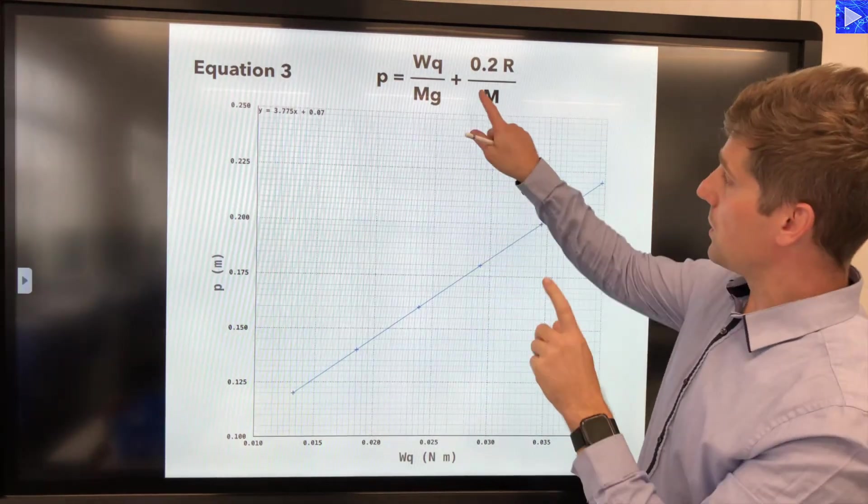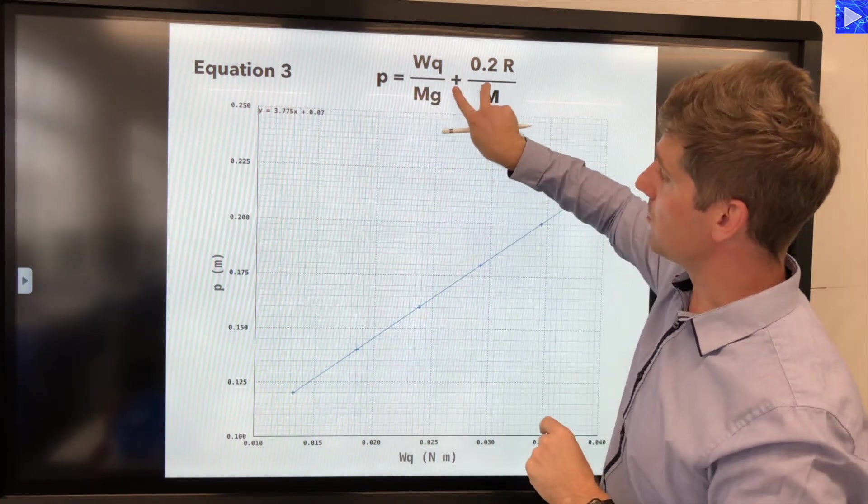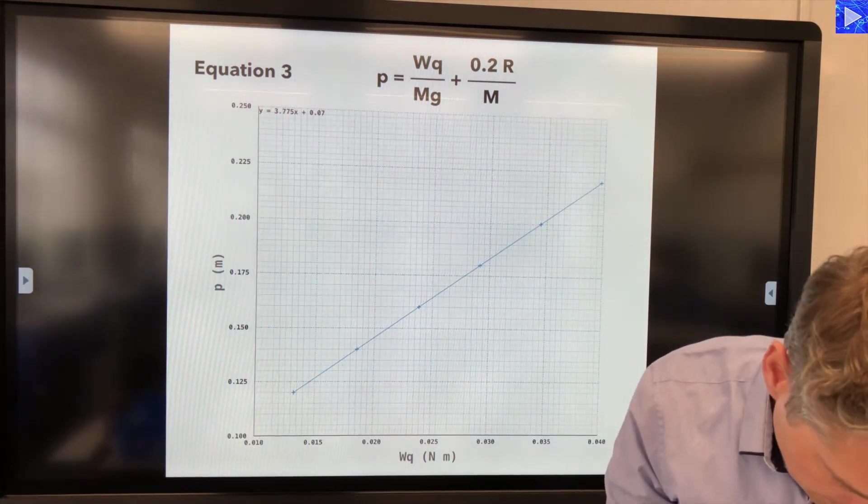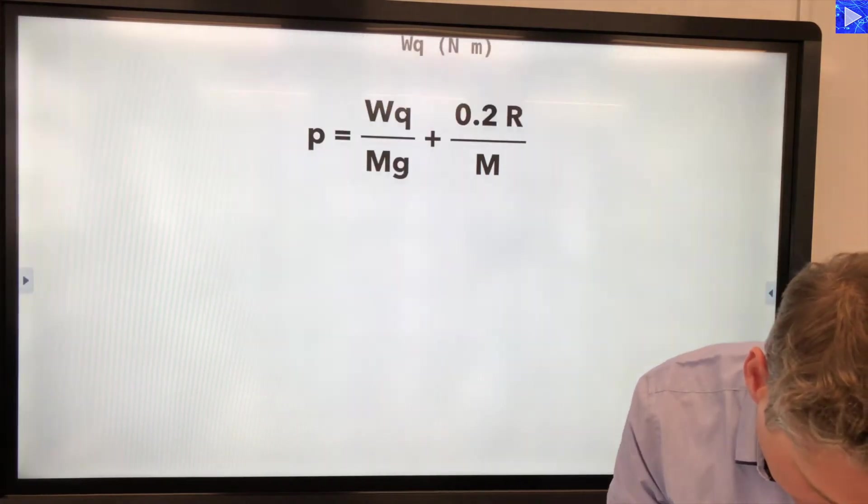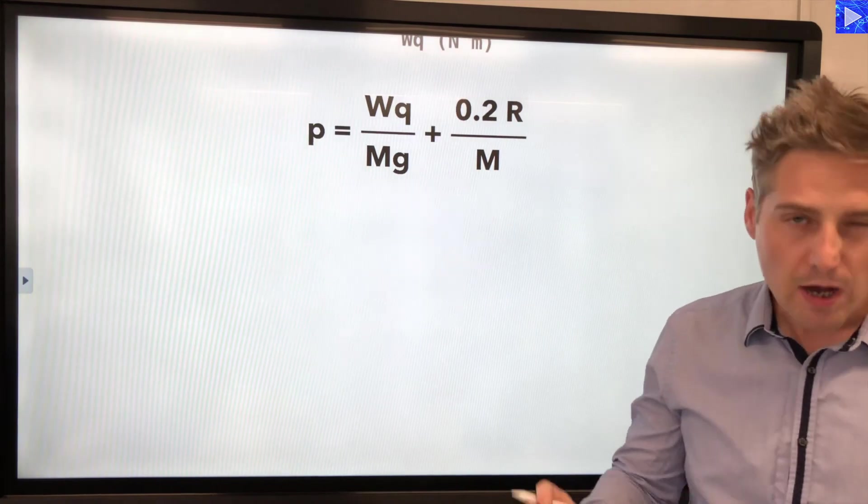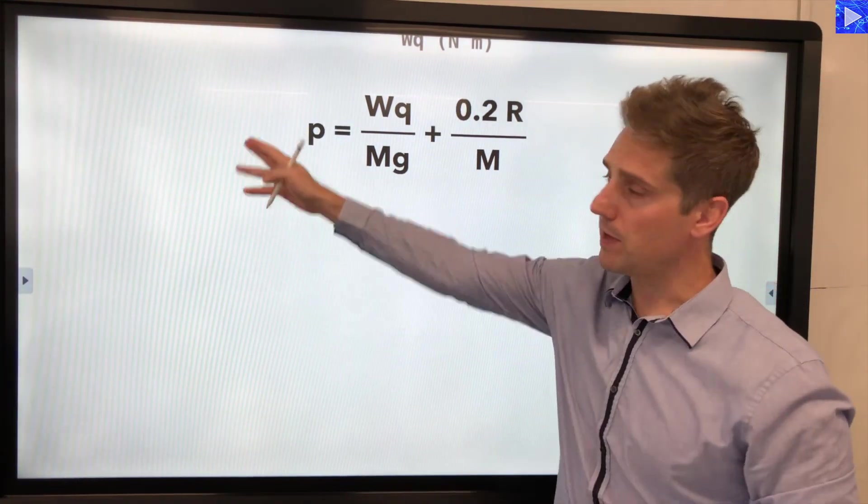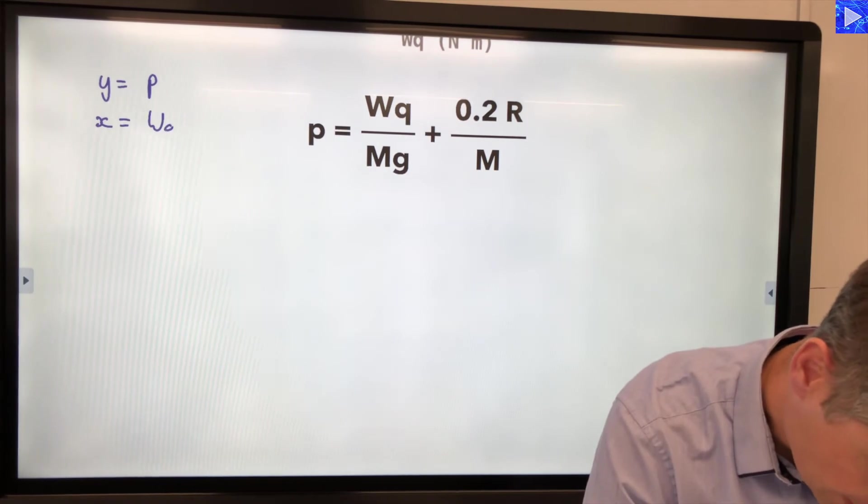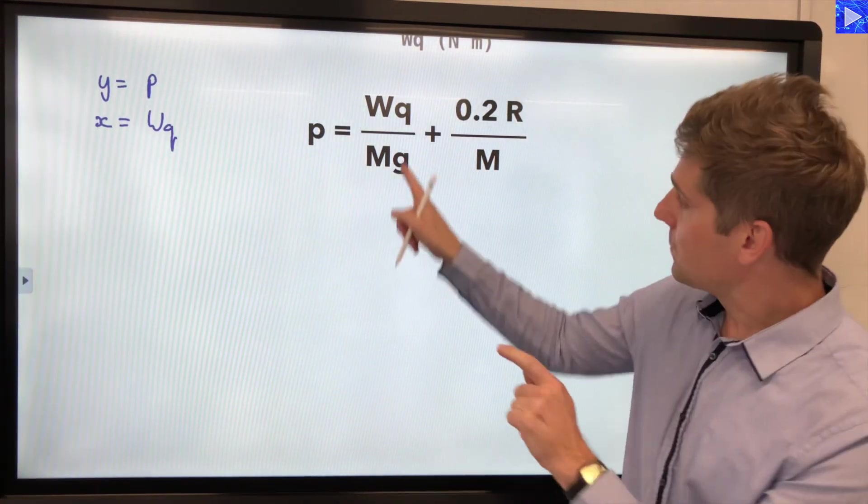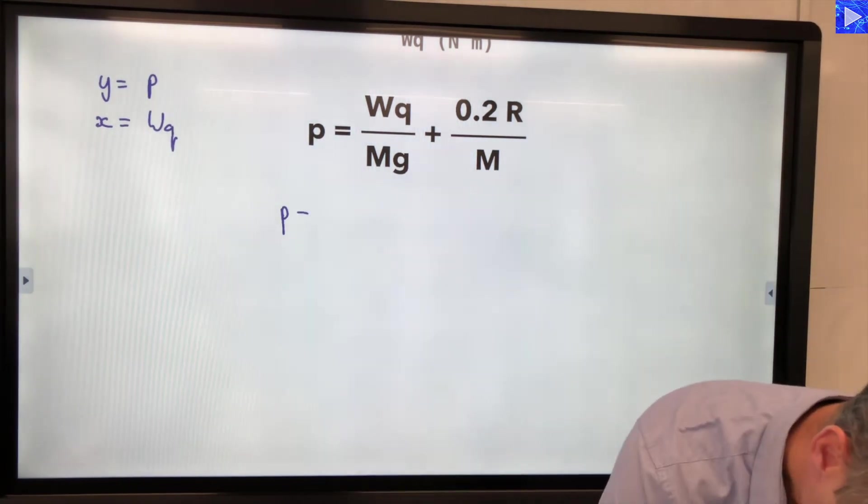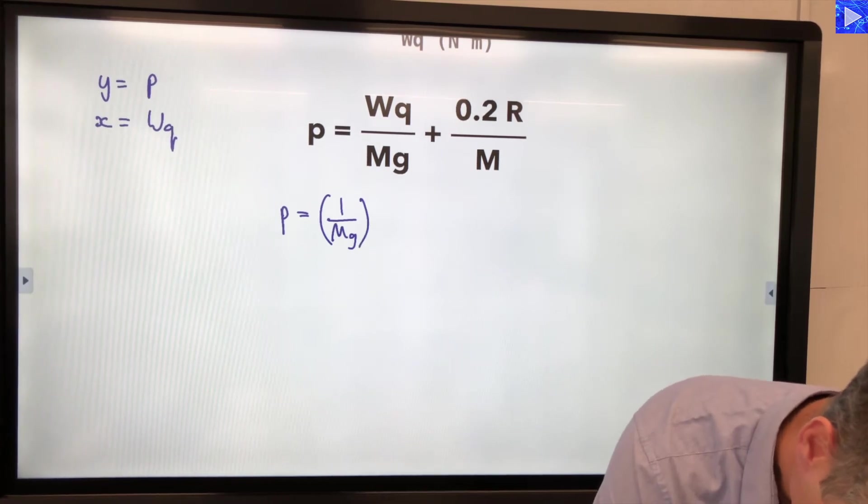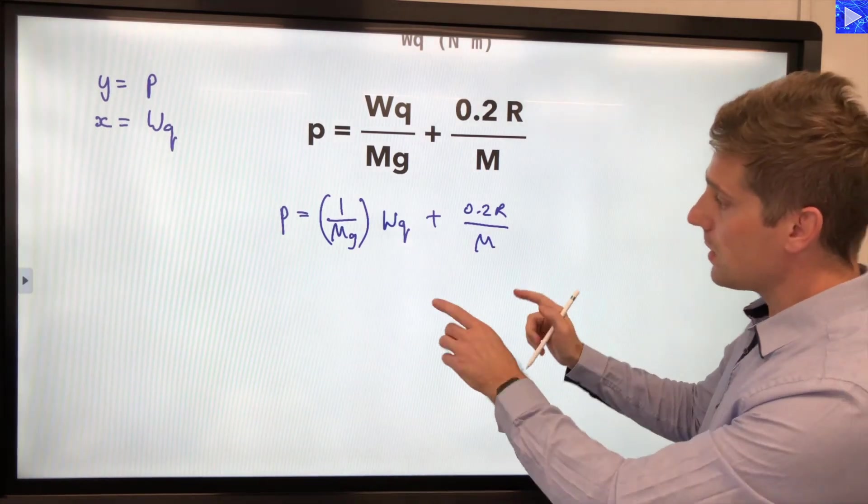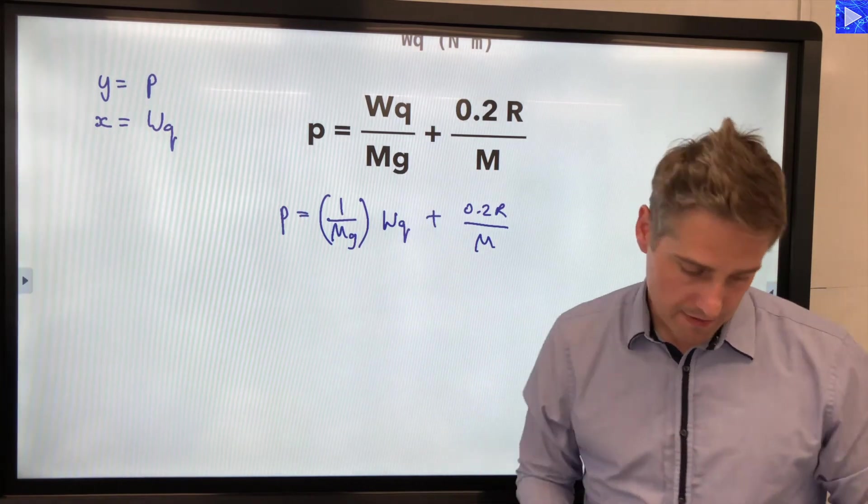So what we're going to do is we're going to separate out this term here. So we have wq multiplied by 1 over mg. So we can see what the gradient is equal to more easily. Let's do that. Here's our equation. I'm just going to note down the y and x variables to the side over here just so we remember what was what. So y equals p and x equals wq. Let's separate out these terms. So that would be p equals 1 over mg times wq plus 0.2 r over m. So that's our equation. Now we can write down y equals mx plus c in parallel and then analyze it.